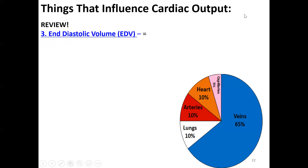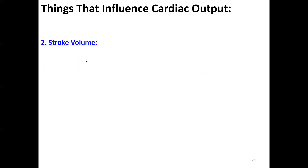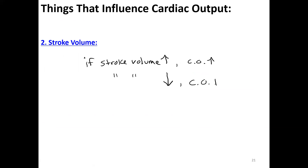Stroke volume is straightforward: if stroke volume goes up, cardiac output goes up. If stroke volume goes down, cardiac output goes down. These are not complicated concepts. If you're a nurse working with a thoracic surgeon these calculations get much more complicated, but as an introduction it doesn't need to be.